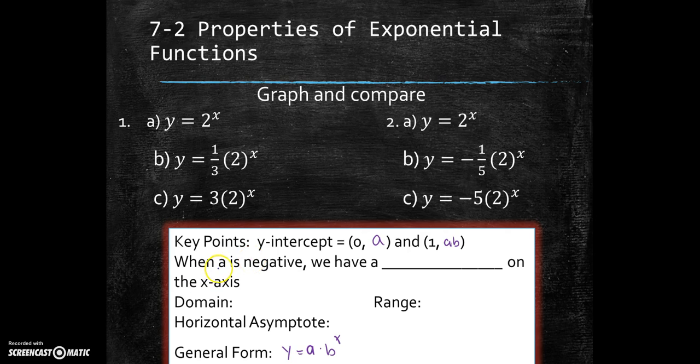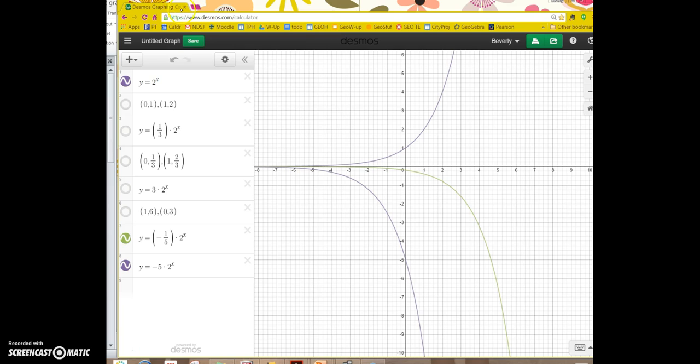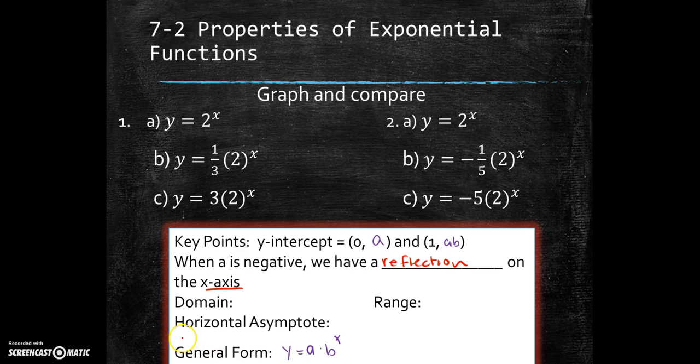So what about when a is negative? Let's go back to the graphs and look at what happens when a is negative. Now what I want to do is I want to look at y equals 2 to the x here, and then I have negative 1 fifth to the x, which is green, and notice that it's a reflection across the x axis. And then negative 5 times 2 to the x is also a reflection across the x axis. When your a value is negative, what do you notice? We have a reflection about the x axis. When a is negative, we have a reflection on the x axis.